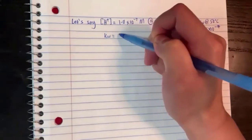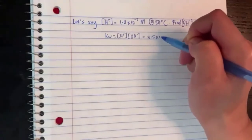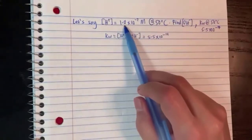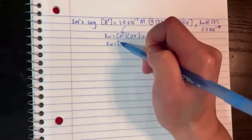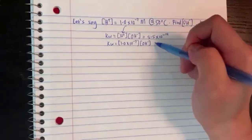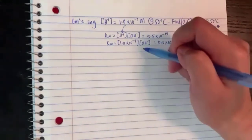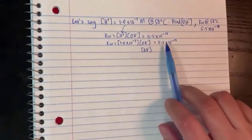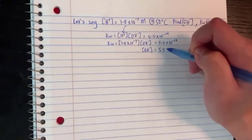The way to do this is set up the equation. KW is H⁺ times OH⁻, and that equals 5.5×10⁻¹⁴. I know H⁺ is 1.0×10⁻⁷, so I plug that in. For K values, we don't use units. OH can be solved by taking 5.5×10⁻¹⁴ divided by 1.0×10⁻⁷, which gives you 5.5×10⁻⁷.